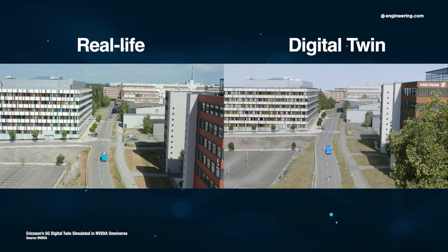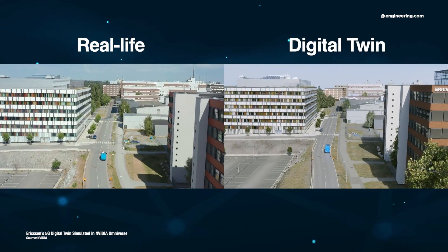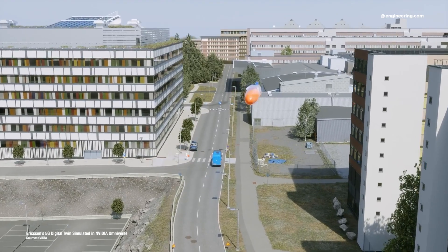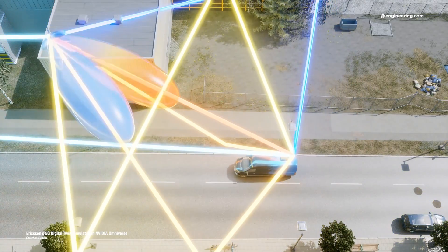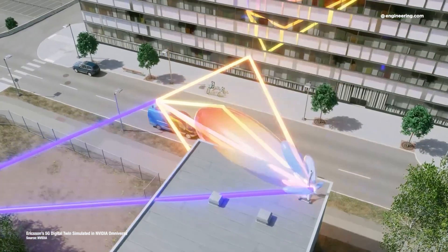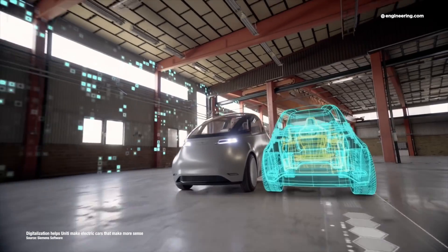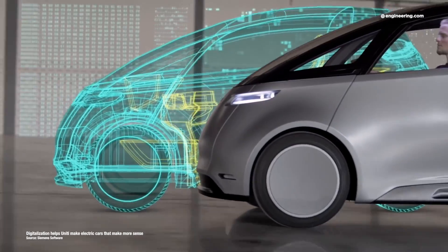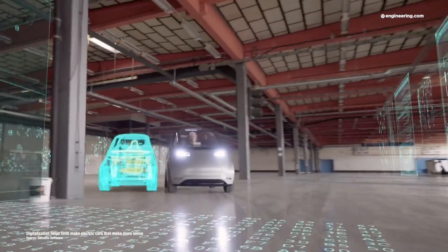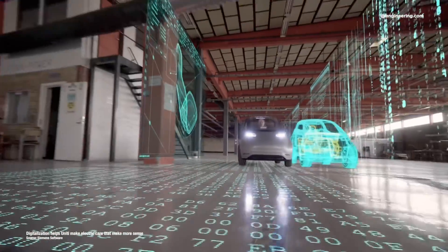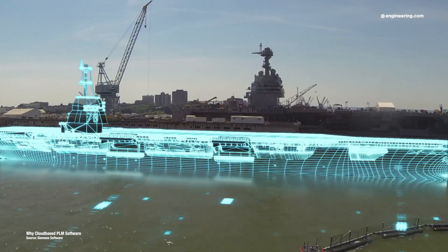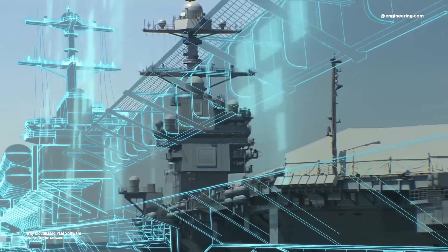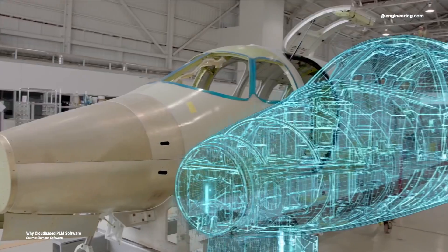A digital twin is a complete virtual doppelganger of anybody, anything, or any process, and it's used to understand and analyze its physical counterpart. For practical engineering purposes, a digital twin doesn't have to be perfect to be useful. It just has to include the relevant details to provide the insight you need for the physical twin. In fact, the most useful digital twins represent the smallest set of data needed to complete or describe the product or system in development.